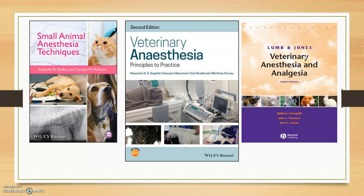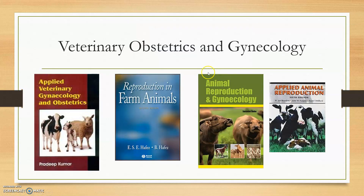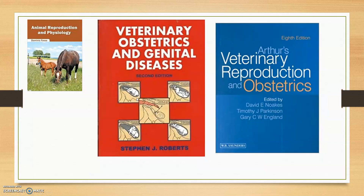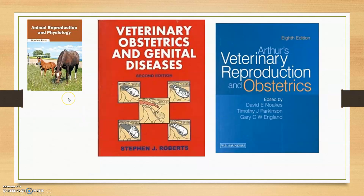For anesthesiology used in veterinary surgery and radiology, Lumb and Jones is the best book for veterinary anesthesia. Moving to animal reproduction and veterinary obstetrics — Hafez is good for gynecological aspects, while Stephen J. Roberts is good for obstetrics and genital diseases. Another good book focuses on Indian animals with many pictures.